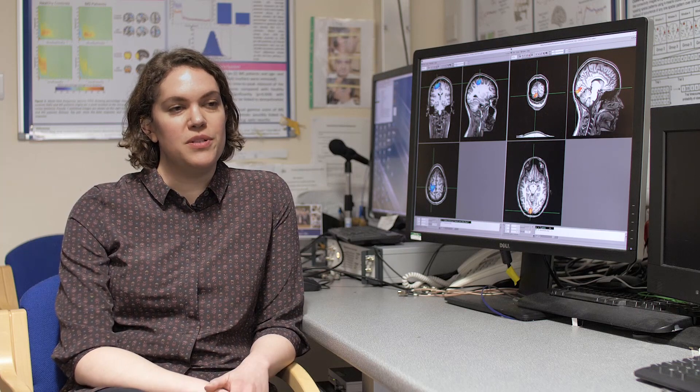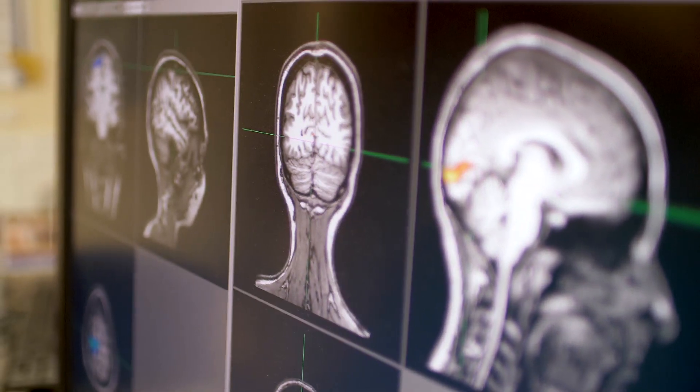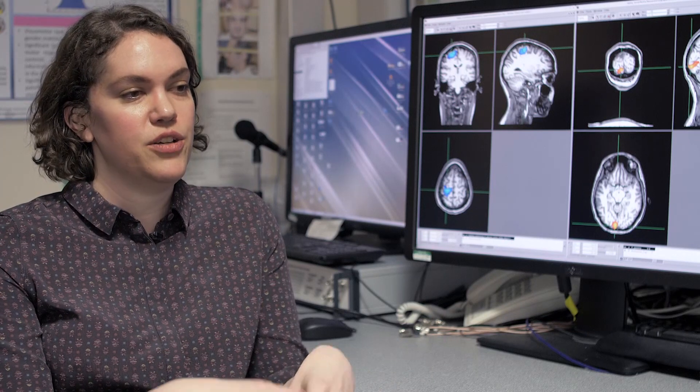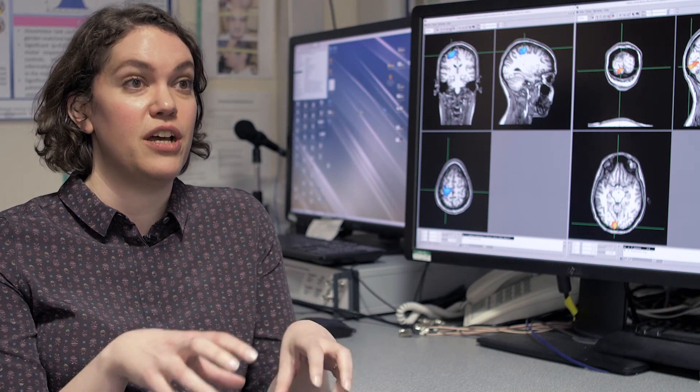We can use brain scanning like MEG, for example, to tell us about mental health by building up a picture of how the healthy brain functions using a really large group of people. And then we can use this to compare with groups of people with specific mental illnesses, and we can see where these differences lie and exactly what differences are occurring in the people with mental illnesses.